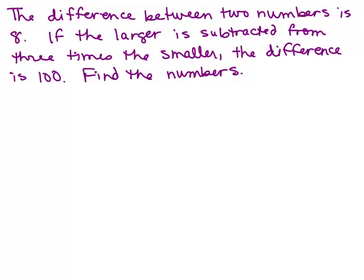For this one, the difference between two numbers is 8. If the larger is subtracted from 3 times the smaller, the difference is 100. Find the numbers. The key here is you're looking for two numbers and we're talking about a larger and a smaller one. So let's define them that way.